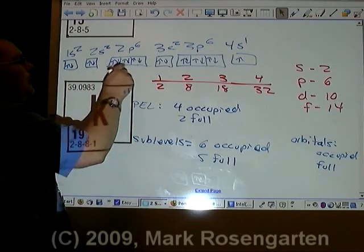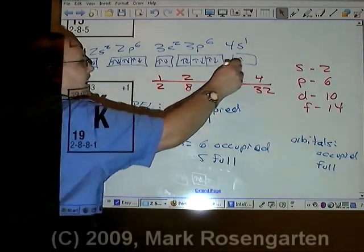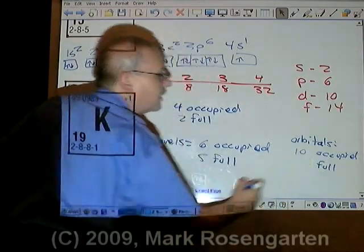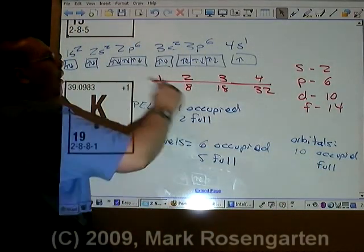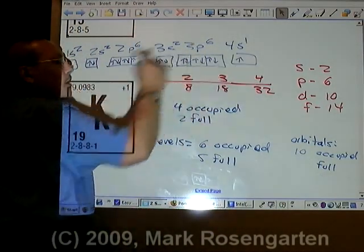We have 1, 2, 3, 4, 5, 6, 7, 8, 9, 10 orbitals that have electrons in them, but all but one of them are full.